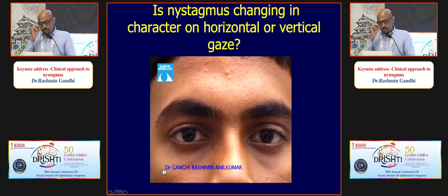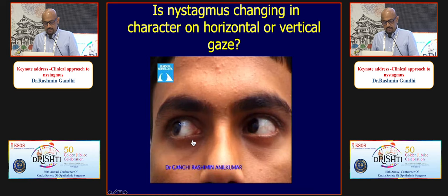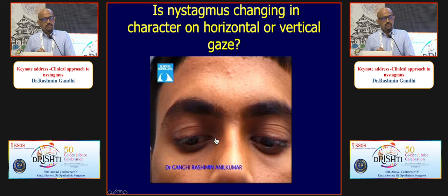Square wave jerks are abnormal saccades that are always horizontal — the eyes move and come back repeatedly. If there is no intersaccadic interval and the eyes keep moving continuously, it is called ocular flutter. If the eyes keep moving in all directions it is called opsoclonus. Square wave jerks may be non-specific and transient, while ocular flutter and opsoclonus require further neurological workup.